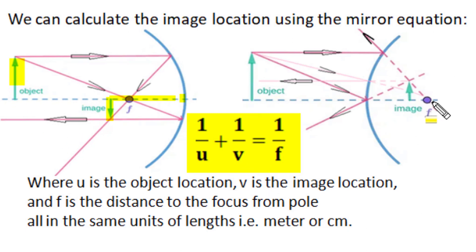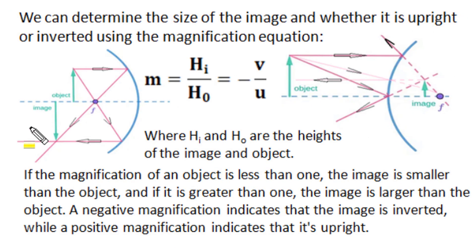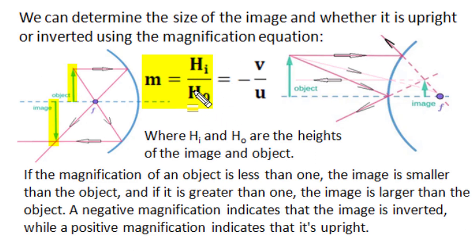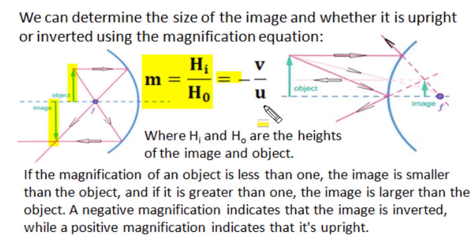To summarize: for a concave spherical mirror, when the object is between infinity and the principal focus, the image is real and inverted; when the object is between the principal focus and the pole, the image is virtual and erect. For a convex mirror, the image is always virtual and erect behind the mirror. For both mirror types, we can find the image position using the mirror equation: 1/u + 1/v = 1/f, where u is object distance from the pole, v is image distance from the pole, and f is the focal distance.